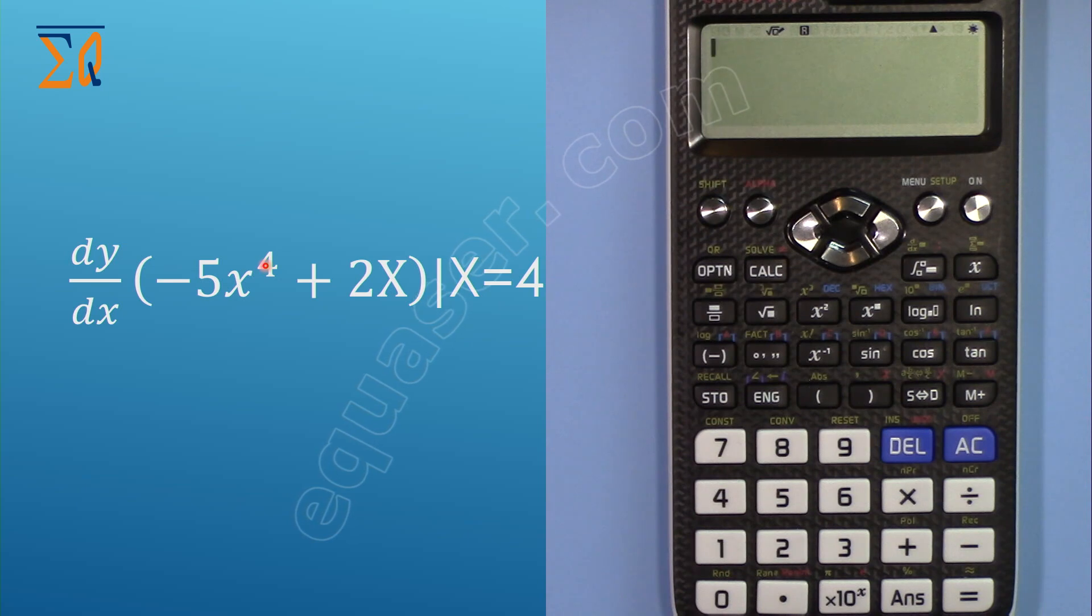Sometimes in physics and other courses, they will ask you to find the position or speed at 5 seconds or some number. You can do it very easily. This function in this calculator takes the derivative, then substitutes x = 4 and evaluates it.